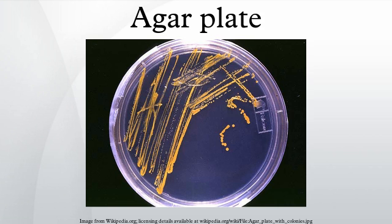In 1881, Fanny Hess, who was working as a technician for her husband Walther Hess in the laboratory of Robert Koch, suggested agar as an effective setting agent, since it had been commonplace in jam making for some time.